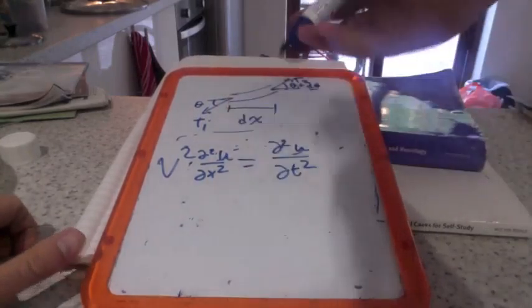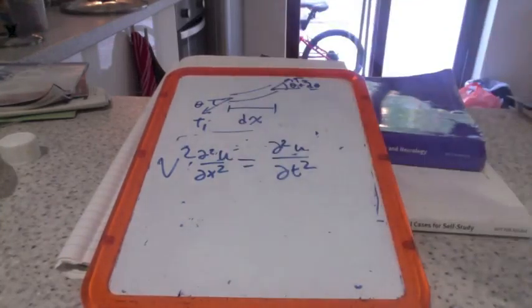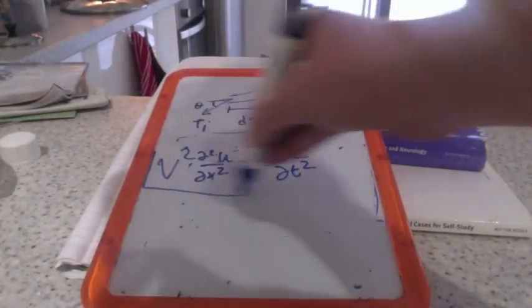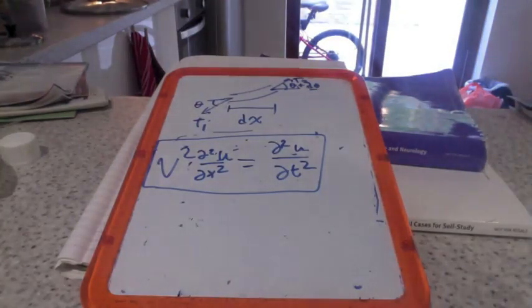This is the wave equation, and this becomes really important in classical mechanics and then later on in quantum mechanics.